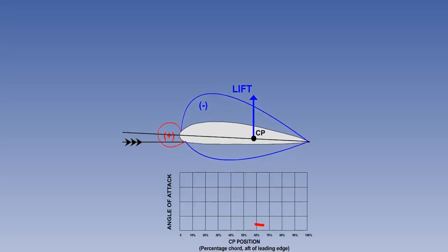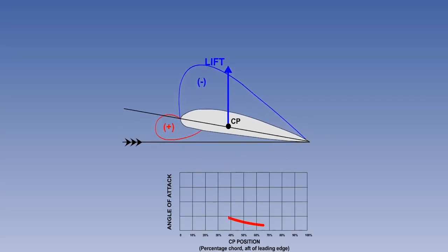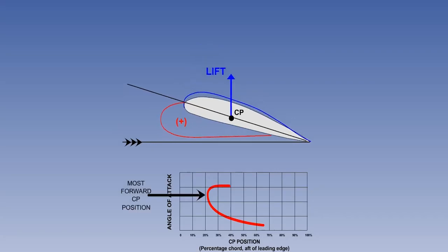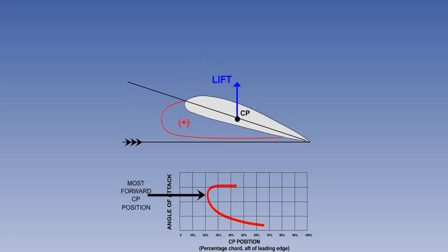As the alpha increases from 0 to 16 degrees, the upper peak of low pressure, or suction, will move forward, taking the point of concentration of lift, the CP, with it. The magnitude of the lift force also increases with alpha, until the stall is reached, at which point the lift force decreases abruptly, and the CP moves back along the chord. Note that the CP is at its most forward point, where lift is at its maximum, just before the stall.